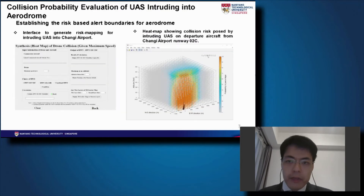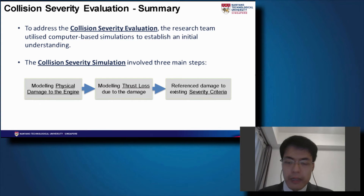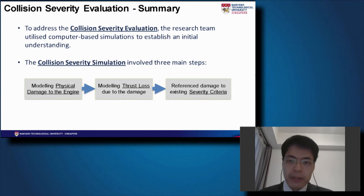For the collision probability evaluation, we utilize a risk analysis algorithm to determine how far away a drone can be spotted that would pose a threat to aircraft operating in their aerodrome — in this case, Changi Airport. Once we completed the collision risk simulation, we moved on to collision severity simulation, done using finite element analysis combined with CFD simulation to produce damage severity criteria for the different types of damage caused.